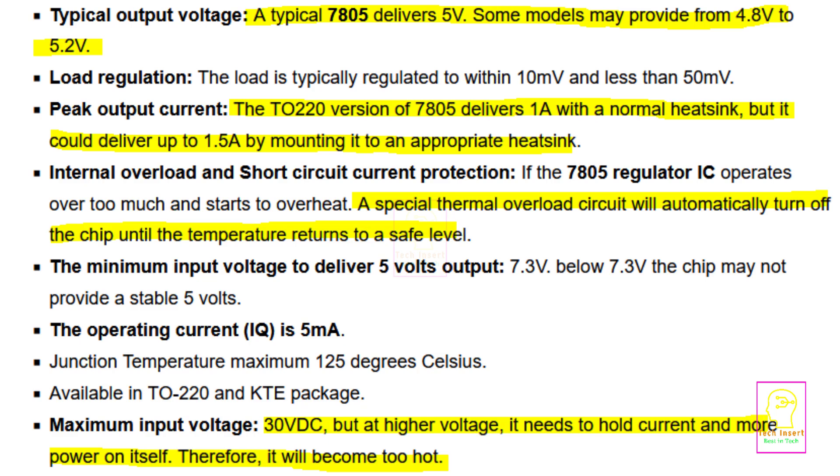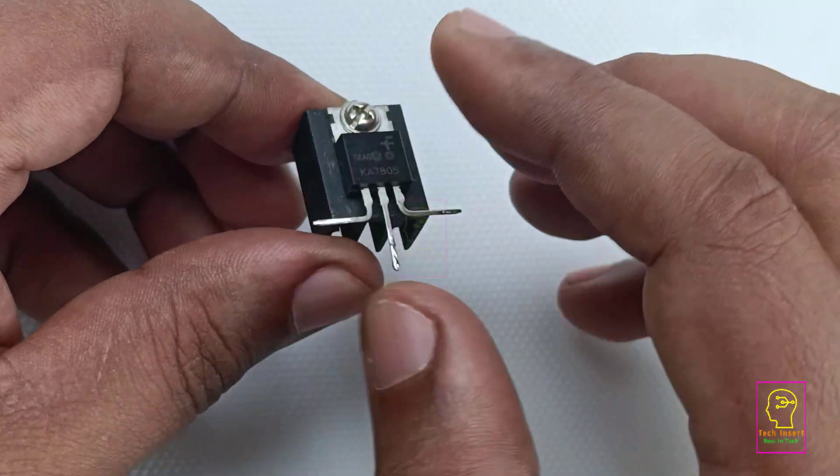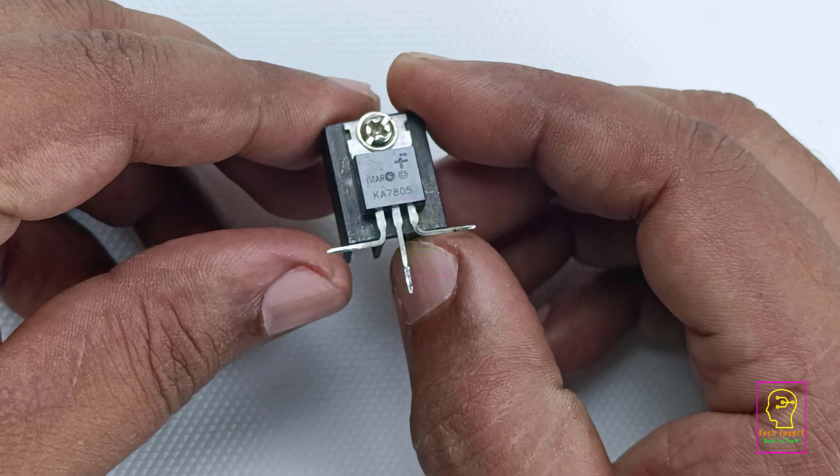Maximum input voltage they have mentioned as 30 volt, but I have given 35 volt and it was working perfectly fine with a very good heatsink. In some models they have mentioned it as the maximum of 25 volt as its input voltage. Which means, if we are giving 30 voltage as its input, then we will get 5 voltage output. What will happen to the other 25 volt? That will dissipate as heat.